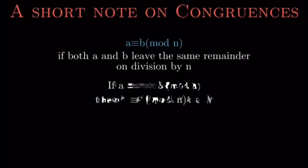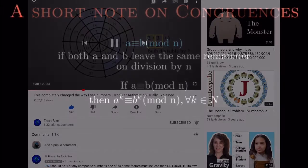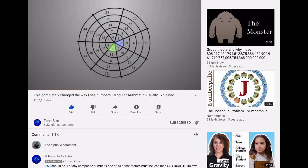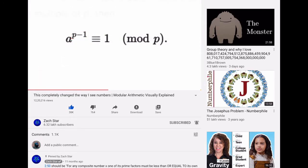Talking of remainders, you may or may not be familiar with the concept of congruences, which we briefly touched upon in our previous video, in which we said that a is congruent to b modulo n if both a and b leave the same remainder on division by n. And talking about modulus, modular arithmetic is brilliant when it comes to finding the remainders when dealing with pretty large dividends in exponential form, as shown in this wonderful video by Zach Star. Link in the description.